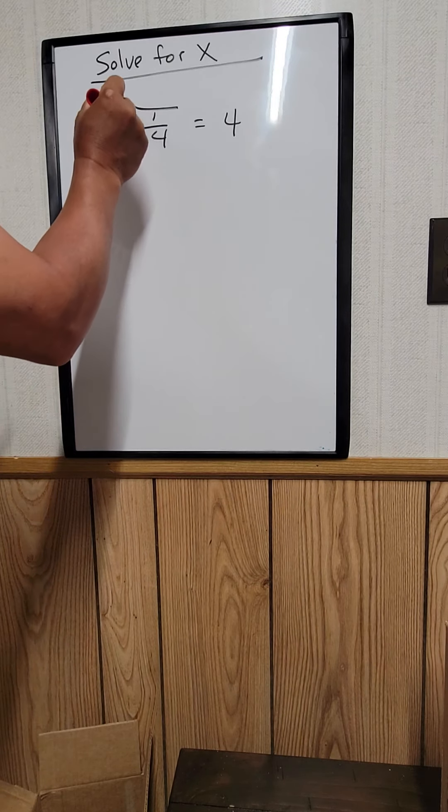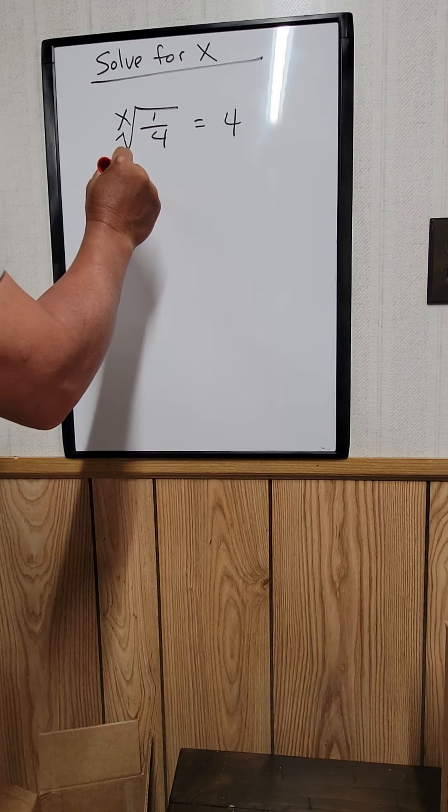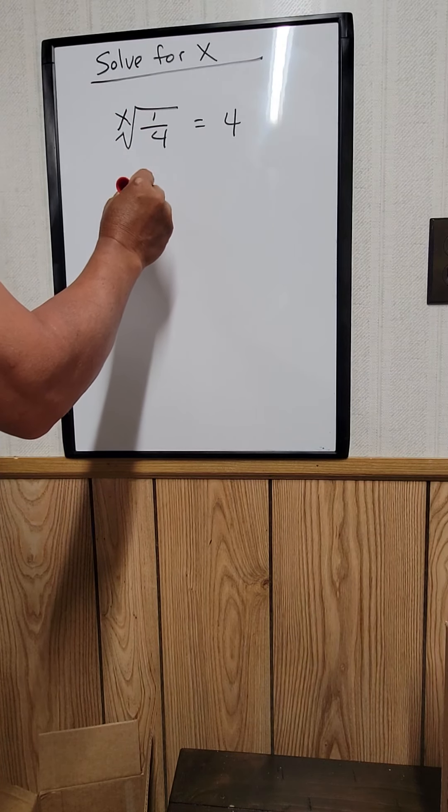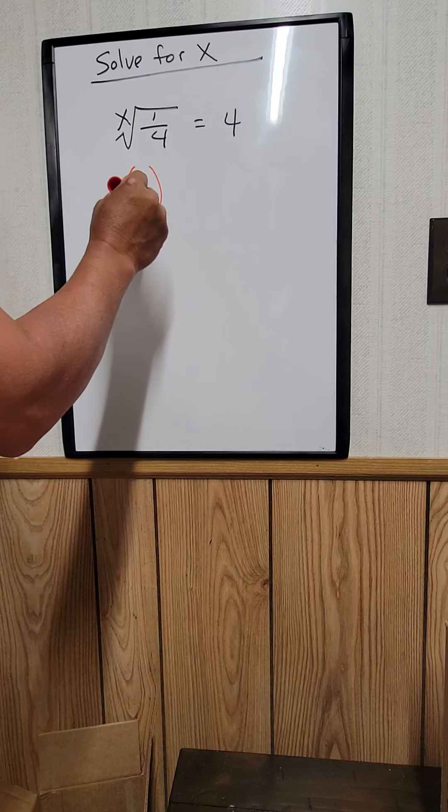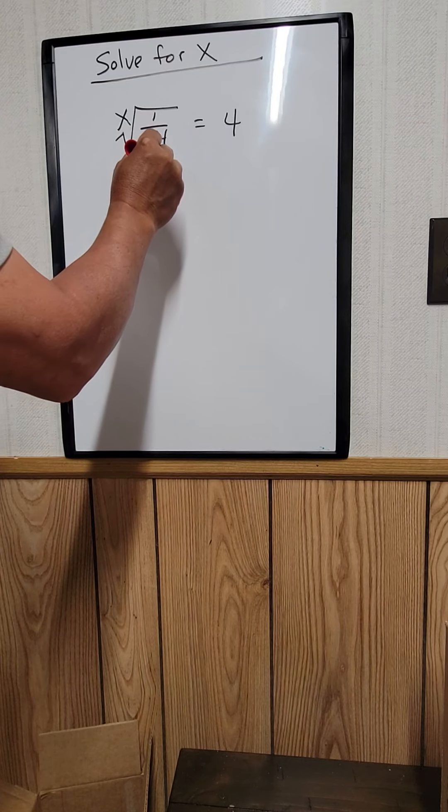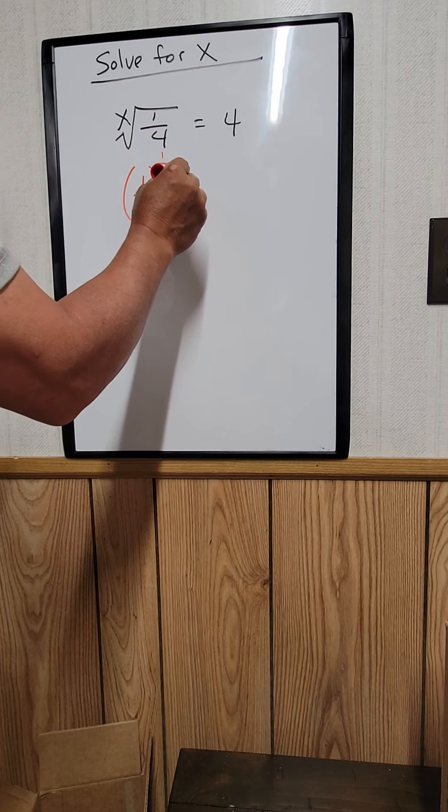So we can rewrite this right here as 1 over 4, the whole thing raised to the power of 1 over x. That's equal to 4.